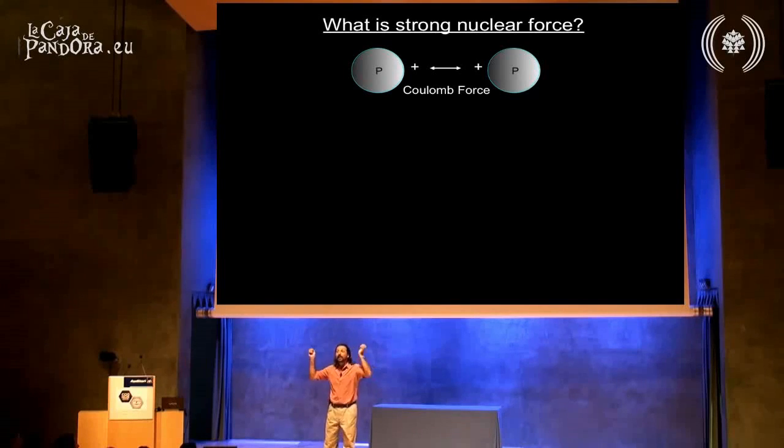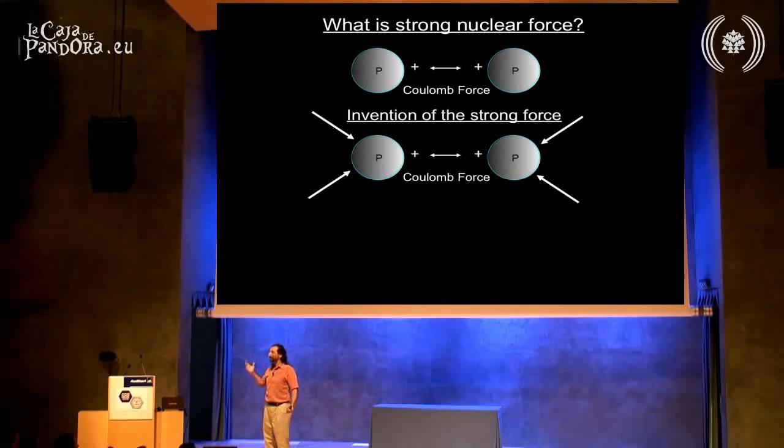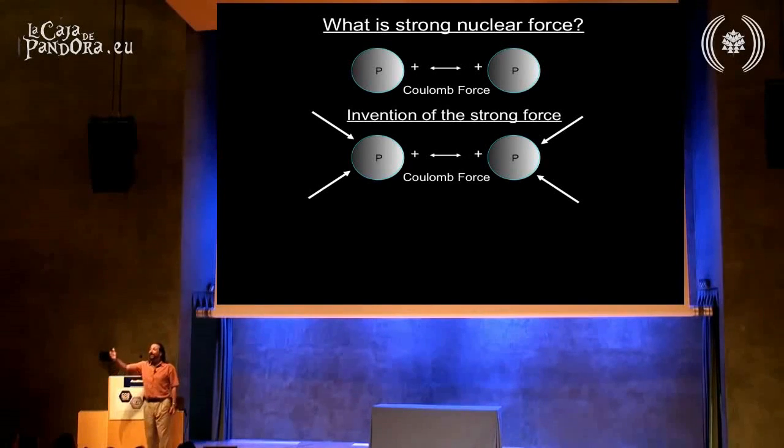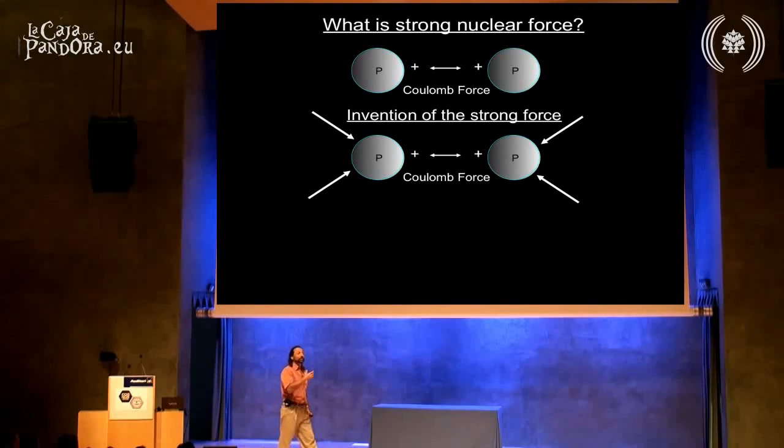So they said, we're going to invent a new force. We'll call it the strong force. Because it has to be very strong. In fact, it would have to be the strongest force in the universe. And they assume that it was there because the atom is together so there must be a force squishing it together.